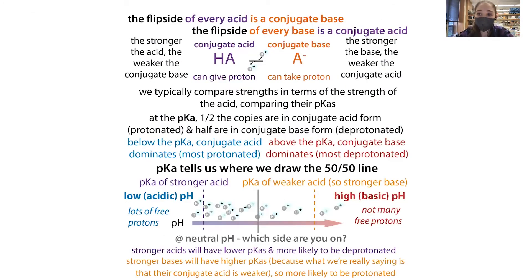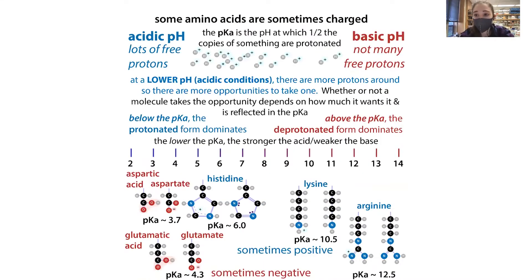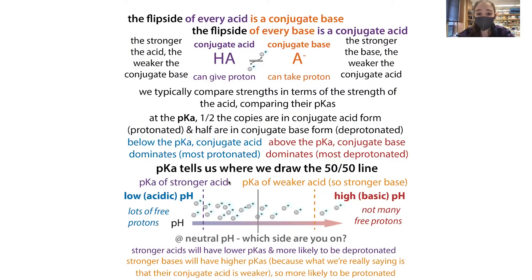We can compare the pKas of different compounds, like different amino acid side chains, in order to get information about their relative basicity or acidity. The pKa tells us where we draw the 50-50 line between the conjugate acid form and the conjugate base form. At the pKa you have a 50-50 mix. If you have a stronger acid, you'll have a lower pKa, and if you have a weaker acid — and therefore a stronger base — you'll have a higher pKa.